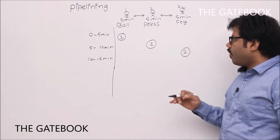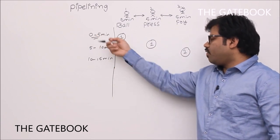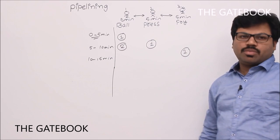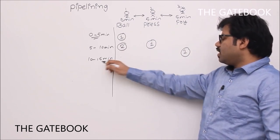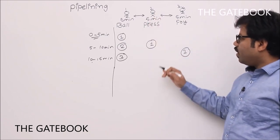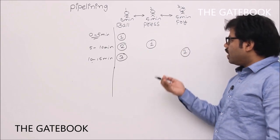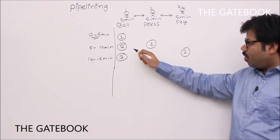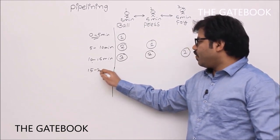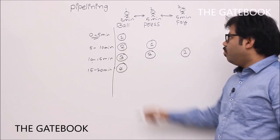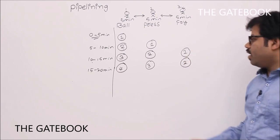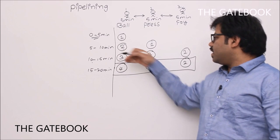Now, after zero-to-five minutes, Raju One is free. Why not make one more ball? Yes — in the five-to-ten-minute slot Raju One makes ball two. In the ten-to-fifteen-minute slot Raju One makes ball three, while Raju Two presses ball two. In the fifteen-to-twenty-minute slot, Raju One makes ball four, Raju Two presses ball three, and Raju Three fries ball two. See the idea — three stages are working at a time, which is the benefit.